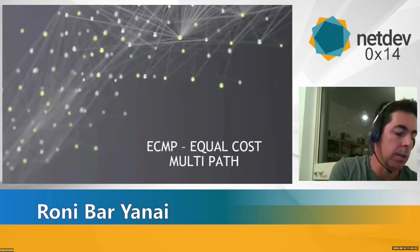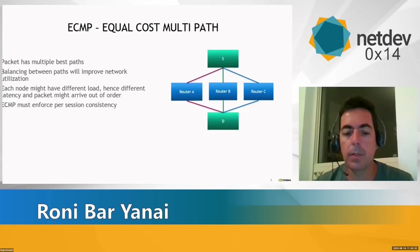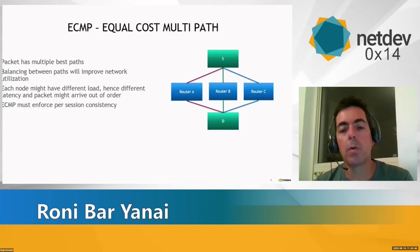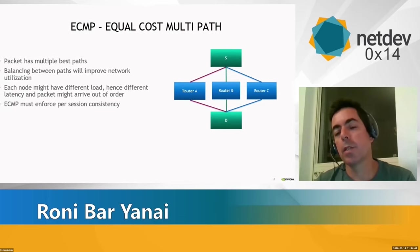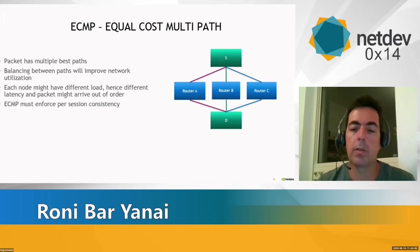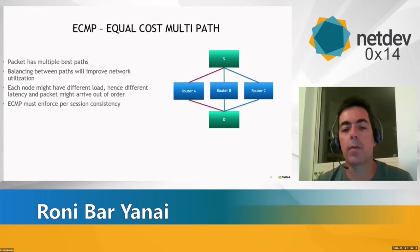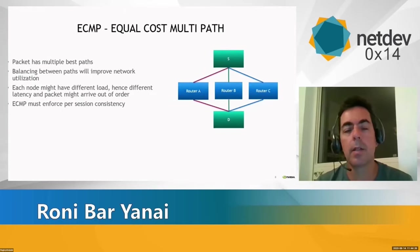Now discussing ECMP — equal cost multipath. When multiple routers have the same L3 distance (same hop count), they're all considered best path. Simply always choosing one router leads to unbalanced utilization. With ECMP, traffic is split across routers A, B, and C. However, packets within the same TCP or UDP session must arrive in order — sending different packets of the same session via different routers with different latencies can cause reordering, which TCP may interpret as packet loss, leading to retransmissions and reduced throughput.